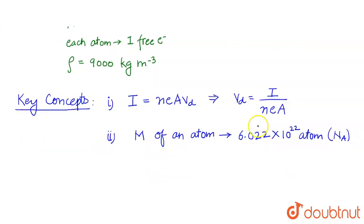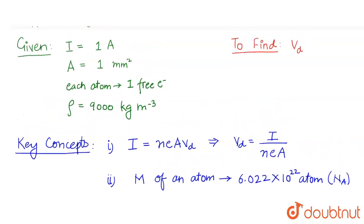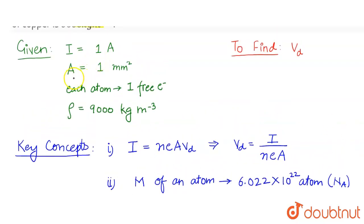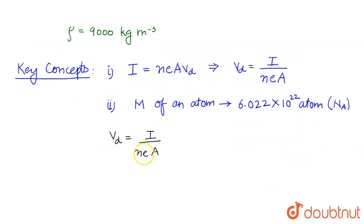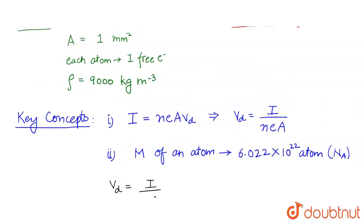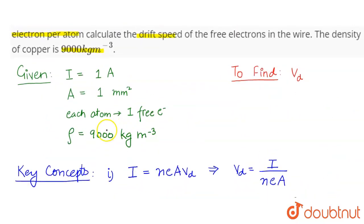From the first key concept we have vd = I upon nea. In the question we are given the current I and the area a, but we are not given the number of free electrons per unit volume. Instead, we are given the density of copper and the fact that each atom contains one free electron.